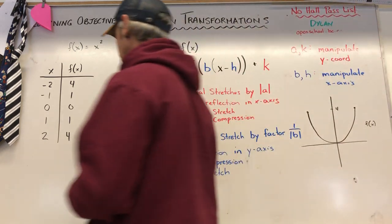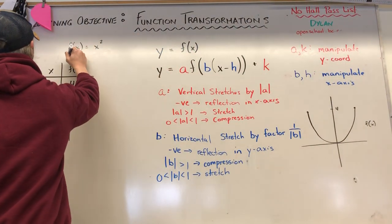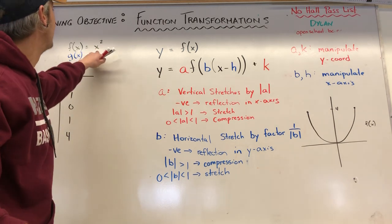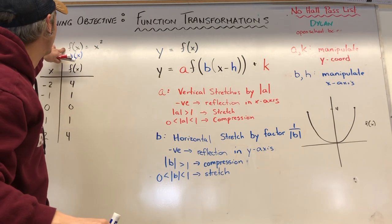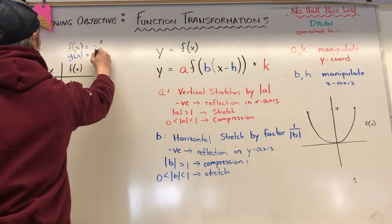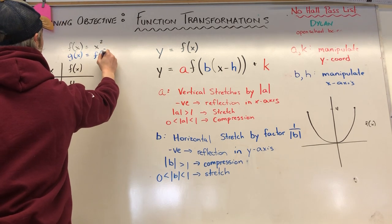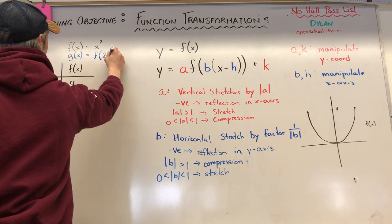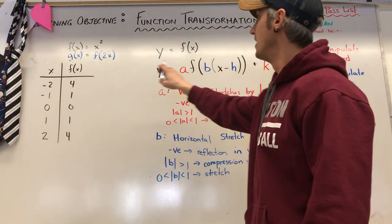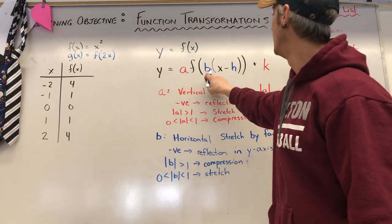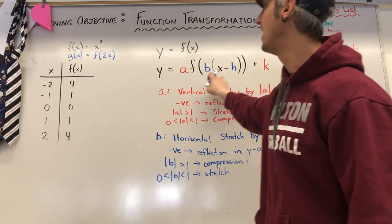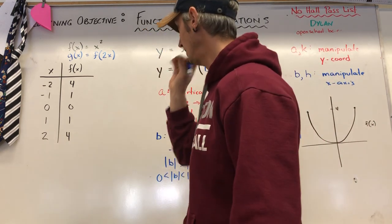Now let's say I have a new function g of x, and I know it as a transformation of f. I'm going to say g of x is equal to f of 2x. I'm inside the bracket, so I know it's either b or h, and this 2 is in front of the x multiplying it, so that means it's my b.